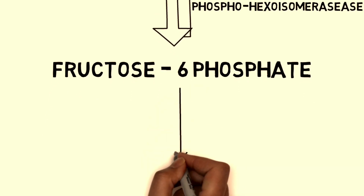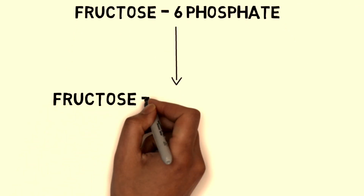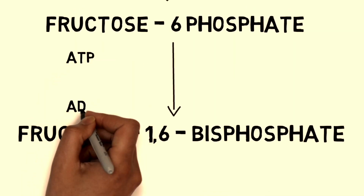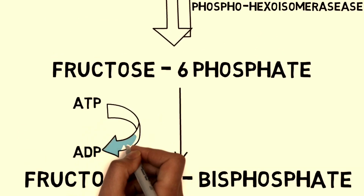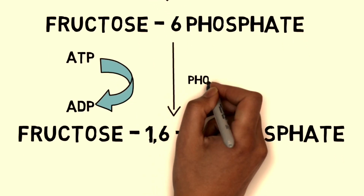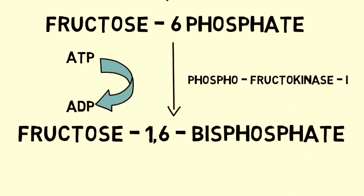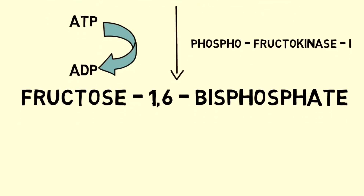Then fructose 6-phosphate is converted to fructose 1,6-bisphosphate. Here also ATP is converted to ADP, and one ATP is used to produce the bisphosphate group. The enzyme used is phosphofructokinase 1. Bisphosphate means the phosphate groups are in separate positions — one is at position 1 and the other at position 6. If two phosphates were at the same position, we would call it diphosphate; since they are at different positions, we call it bisphosphate.